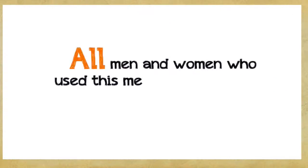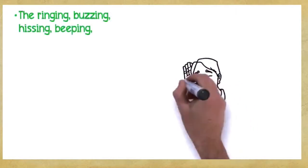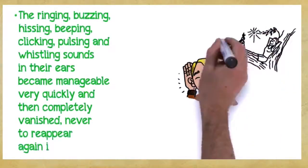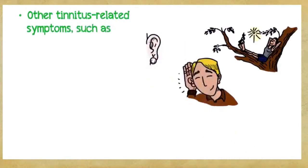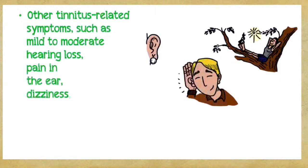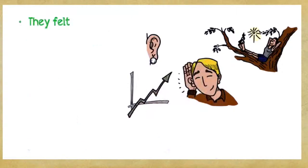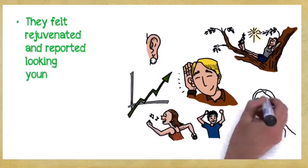All men and women who used this method experienced the following benefits. The ringing, buzzing, hissing, beeping, clicking, pulsing, and whistling sounds in their ears became manageable very quickly and then completely vanished, never to reappear again in less than 30 days. Their feelings of tension, anxiety, agitation, and exhaustion from tinnitus vanished. Other tinnitus-related symptoms such as mild to moderate hearing loss, pain in the ear, dizziness, and the feeling of fullness in the ear were completely eliminated. They felt happier, calmer, and more energetic. They felt rejuvenated and reported looking younger and more vibrant.